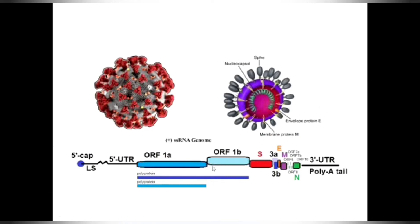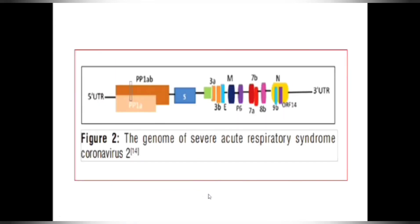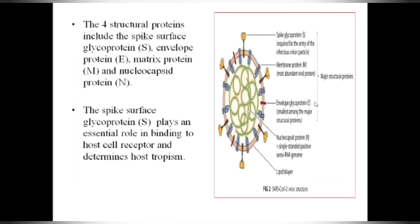Multiple questions can come from this structure — what is the size of this genetic code, how many bases it consists of, what polyproteins it codes for. The genome can be represented as: ORF coding polyprotein 1A and 1B, then surface protein, then 3A, 3B, envelope, membrane, nucleocapsid, and 3' untranslated region. This is the genome of SARS-CoV-2.